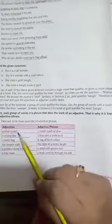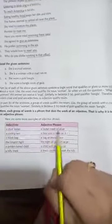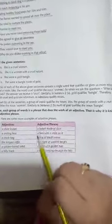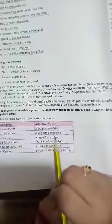Now take some more examples. A silver locket - a locket made of silver. Smiling face - a face with a smile on it. A black bag - a bag of black color.